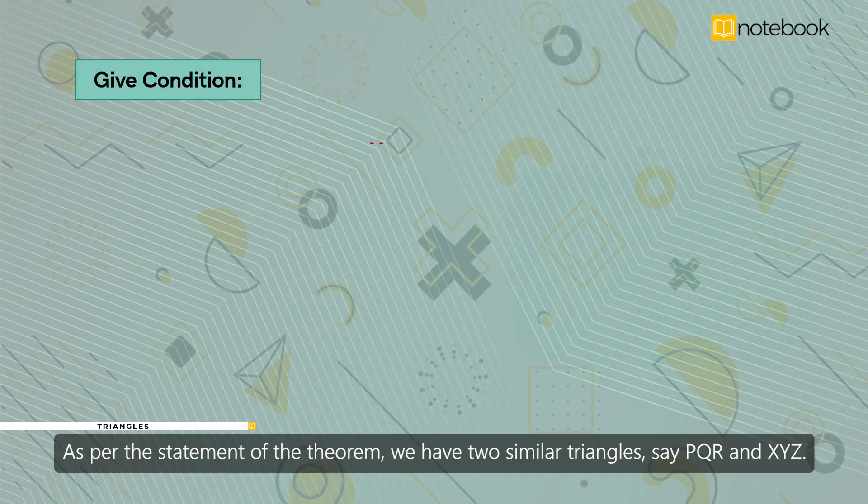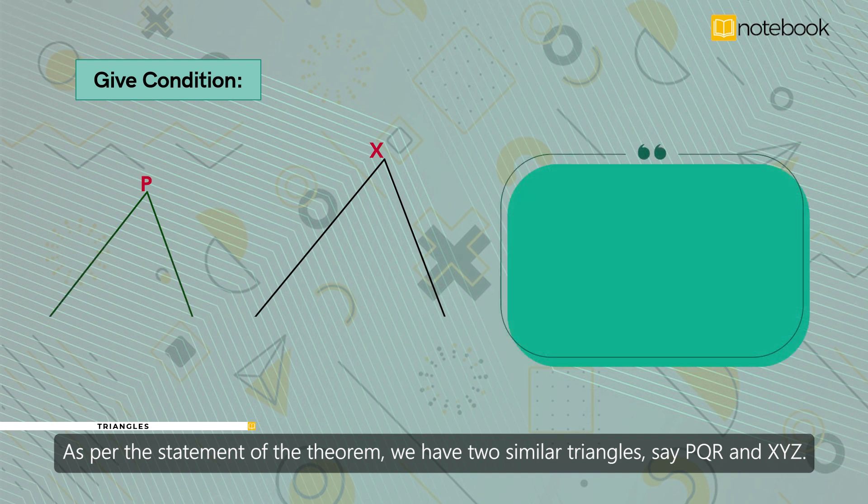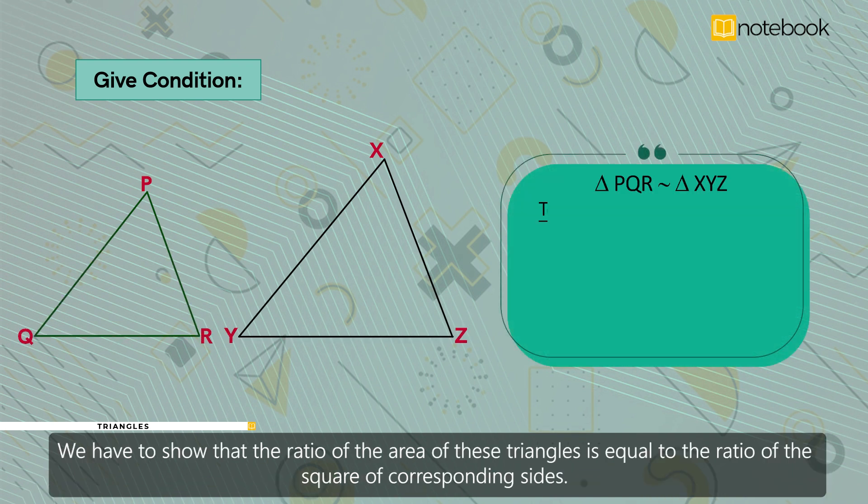As per the statement of the theorem, we have two similar triangles, say PQR and XYZ. We have to show that the ratio of the area of these triangles is equal to the ratio of the square of the corresponding sides.